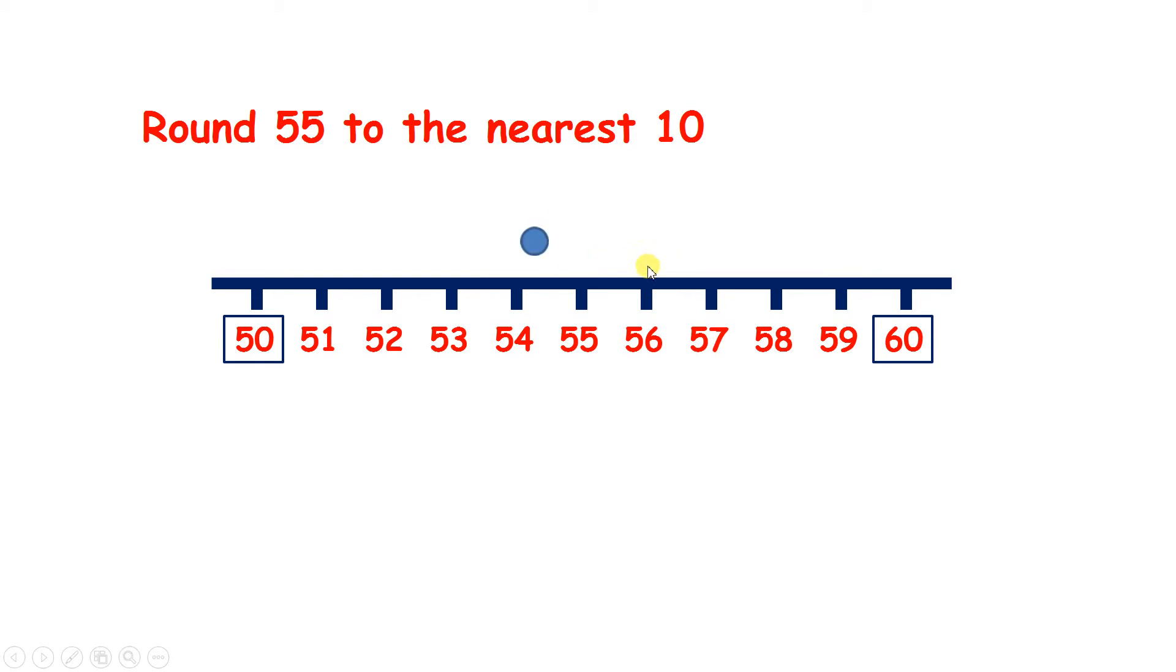So if we go back 5, we get to 50, but if we go forward 5, we get to 60. And here's what you need to know. When a number is right in the middle of two multiples of 10, you always round up, so you always go to the larger number. So 55 rounds to 60. It rounds up to 60.